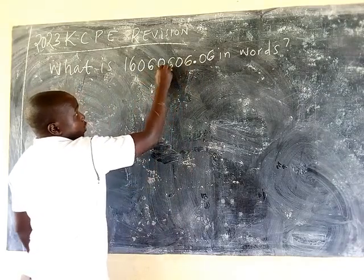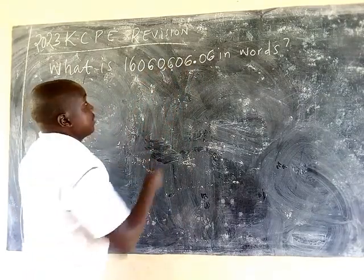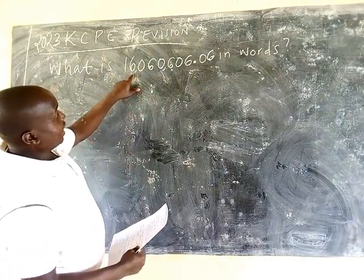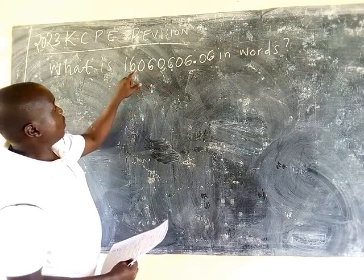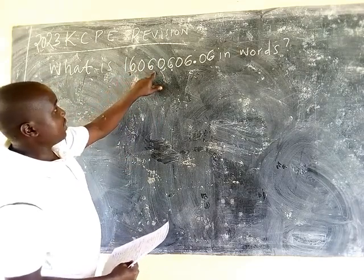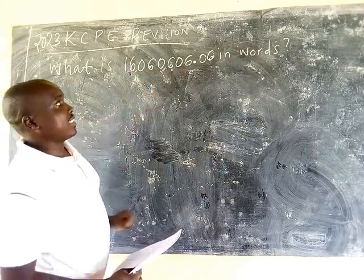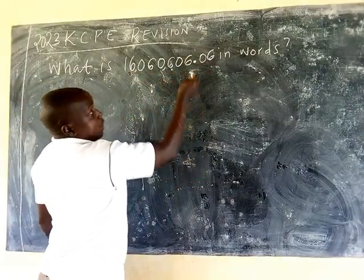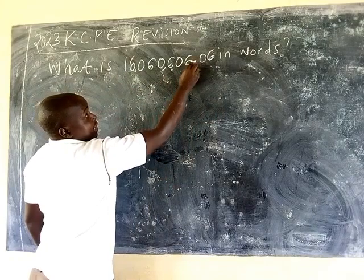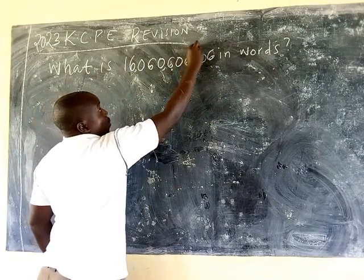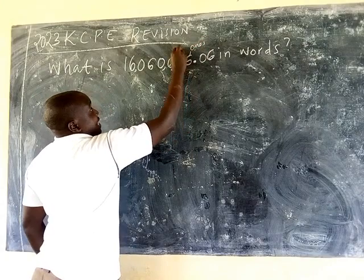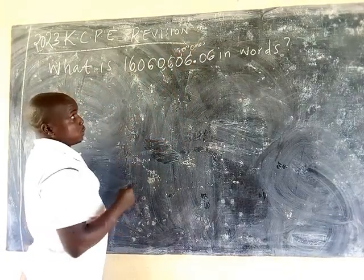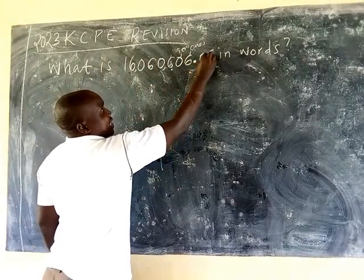So 1, 2, 3 — like that. We start writing: this is 16 million, 60,000, 606. When we reach here, we start from the decimal place: this is ones, this one is tens, and this one is thousands — that is how it works.